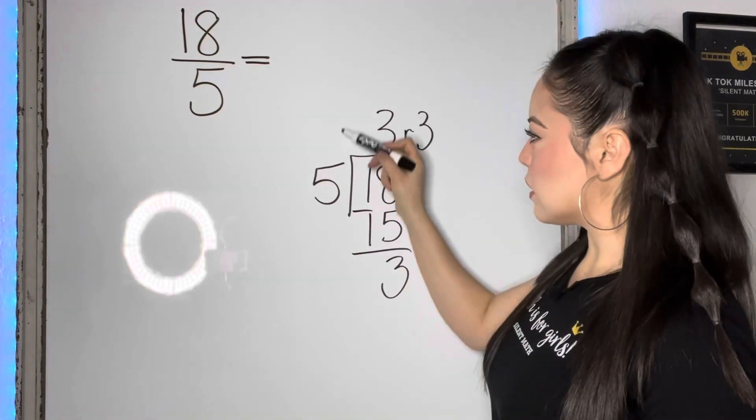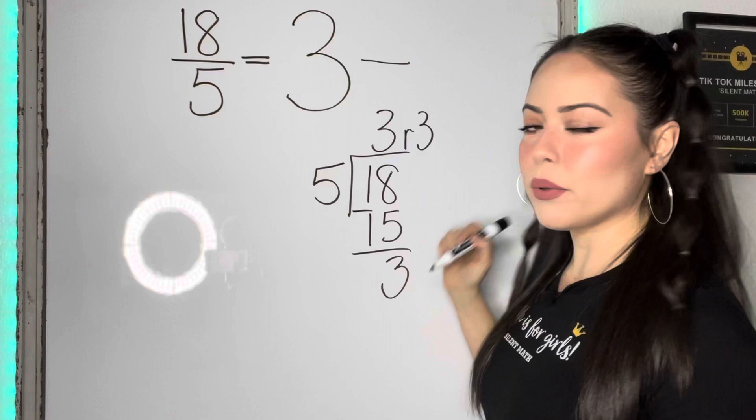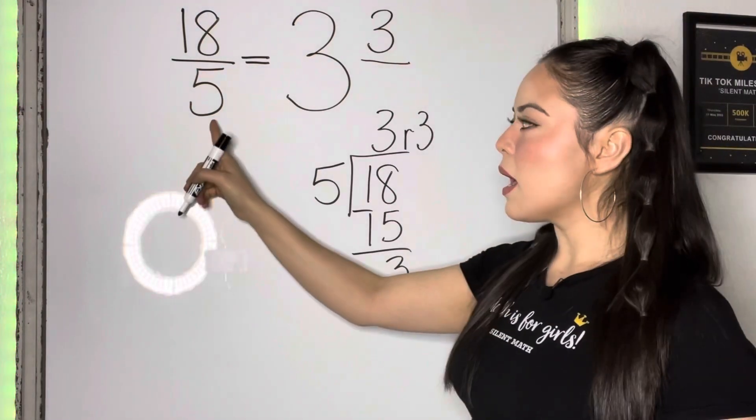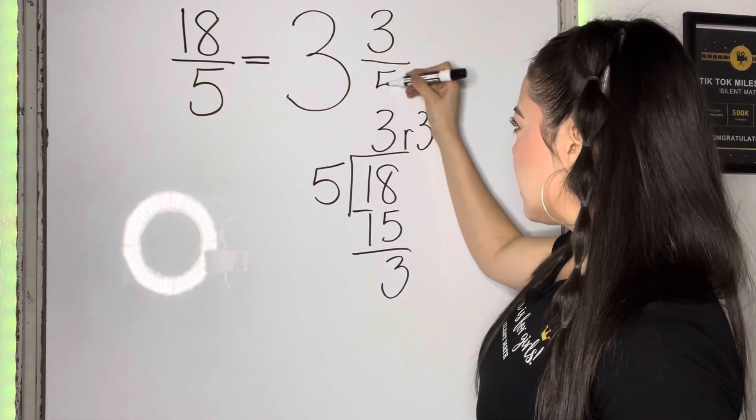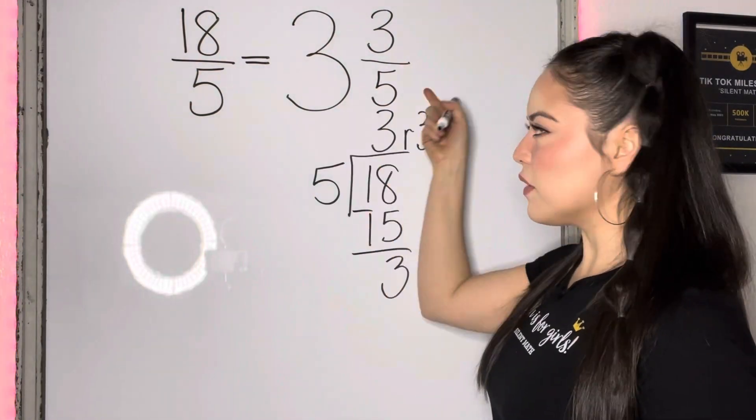And so we're gonna put this three on the left side as the whole number of your mixed number. The remainder three will be the numerator of your mixed number, and we're gonna copy the denominator from your improper fraction onto your mixed number. So 18 fifths is equivalent to three and three fifths.